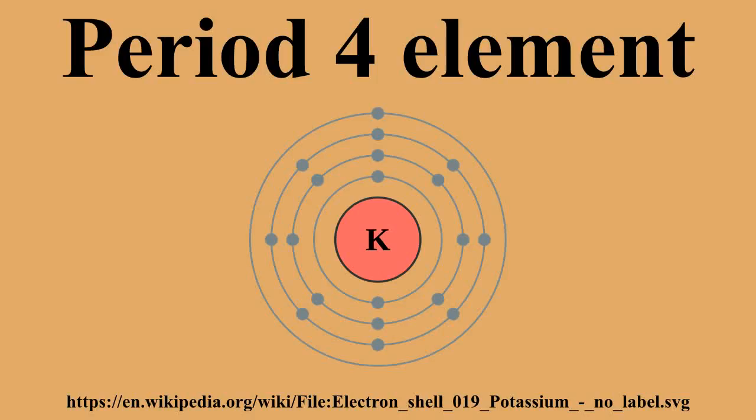A period 4 element is one of the chemical elements in the fourth row of the periodic table of the elements. The periodic table is laid out in rows to illustrate recurring trends in the chemical behavior of the elements as their atomic number increases.